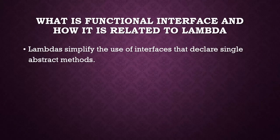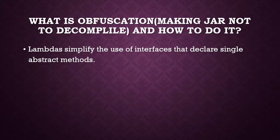What is a functional interface and how is it related to lambda? In simple words, lambda simplifies the use of interfaces that declare a single abstract method — lambdas operate on functional interfaces. What is obfuscation? The answer given was: making a JAR not decompilable, and how to do it.